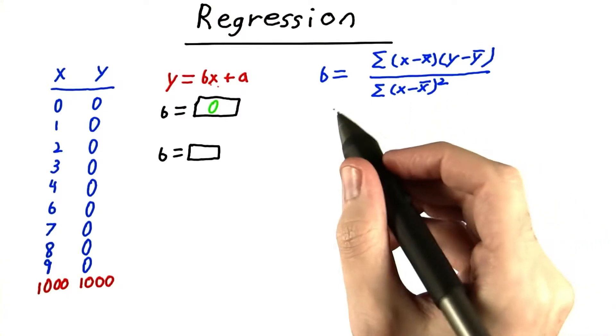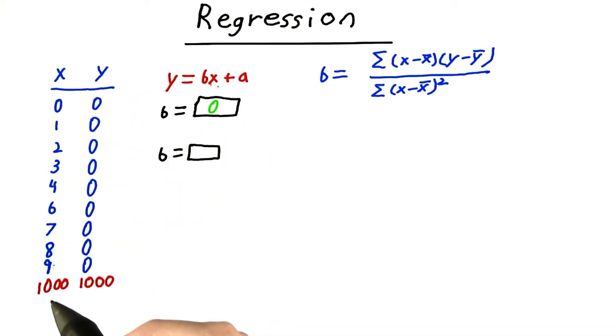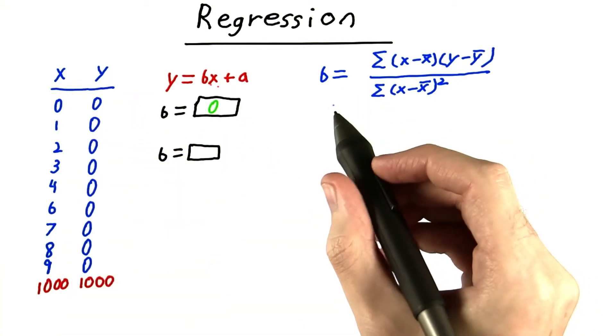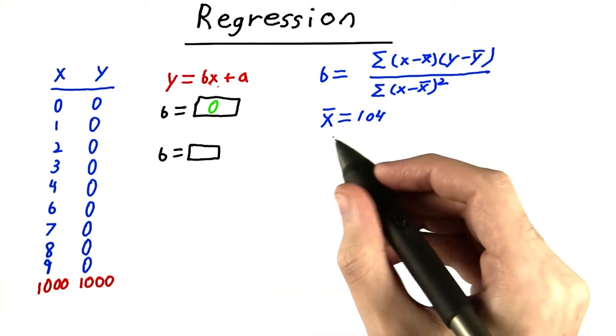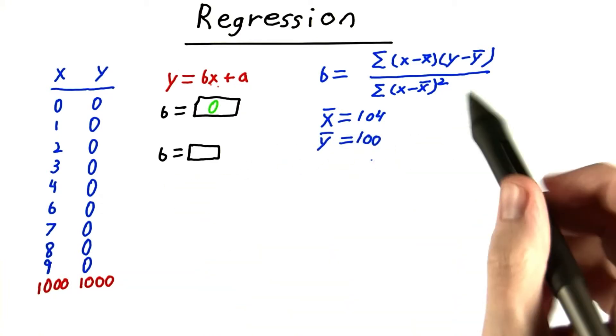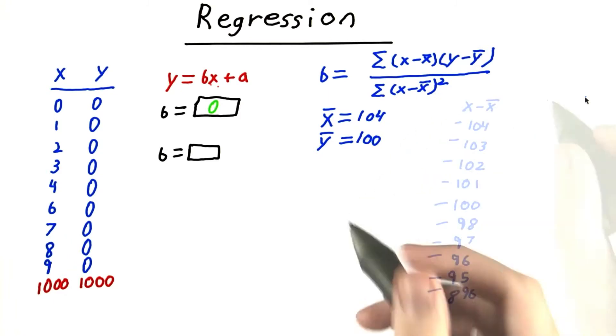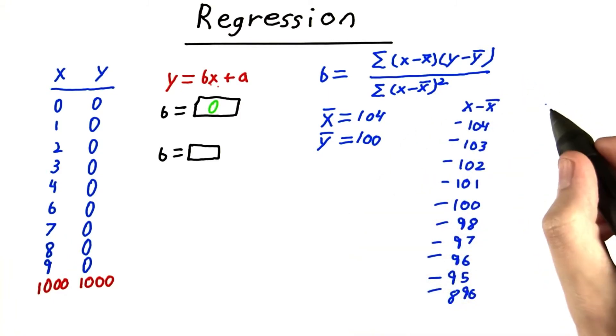So, the mean of the x's is 104 and the mean of the y's is 100. So now let's write our deviations for each term, and now for the differences of the y's.